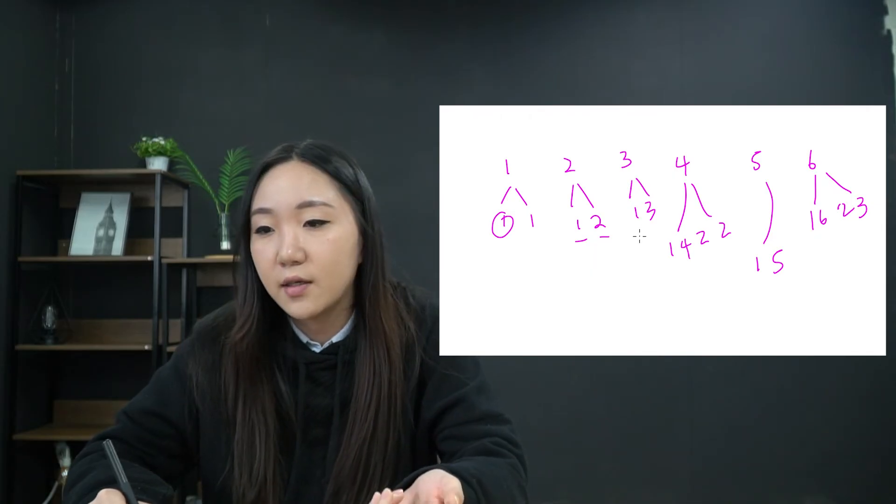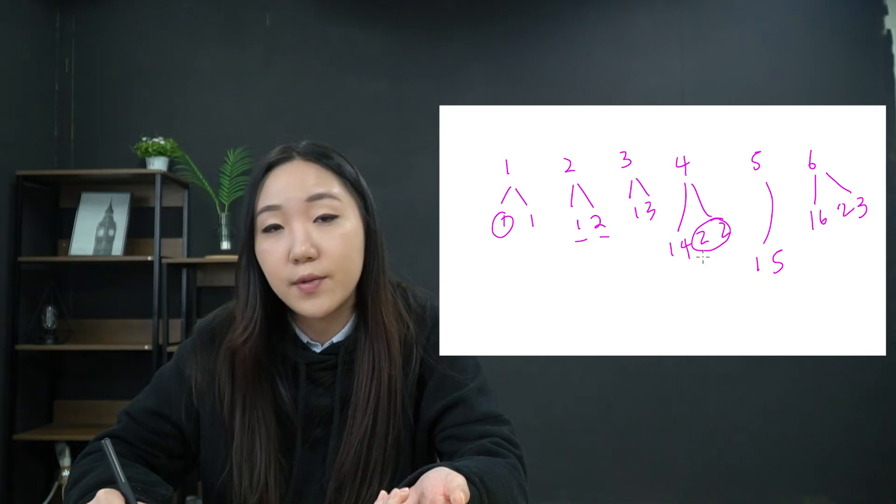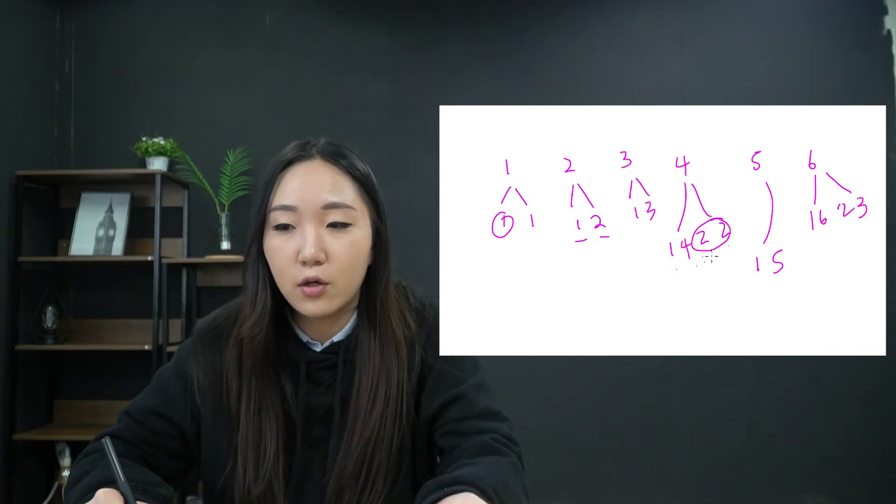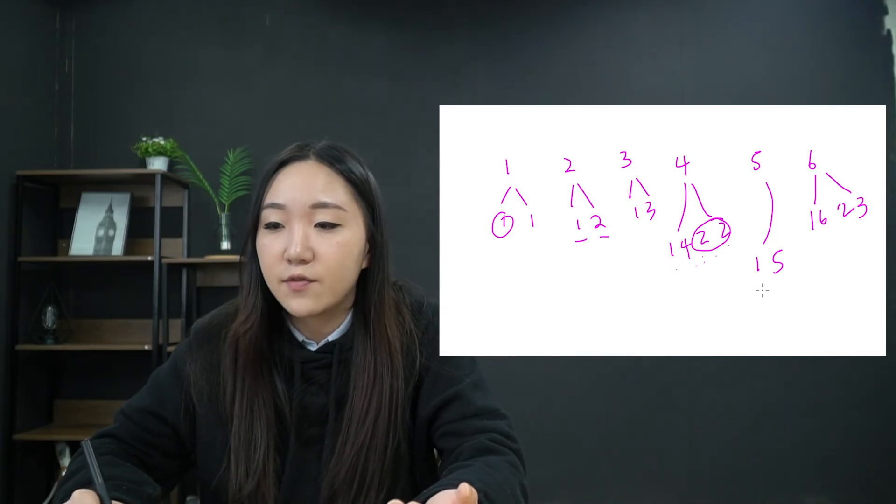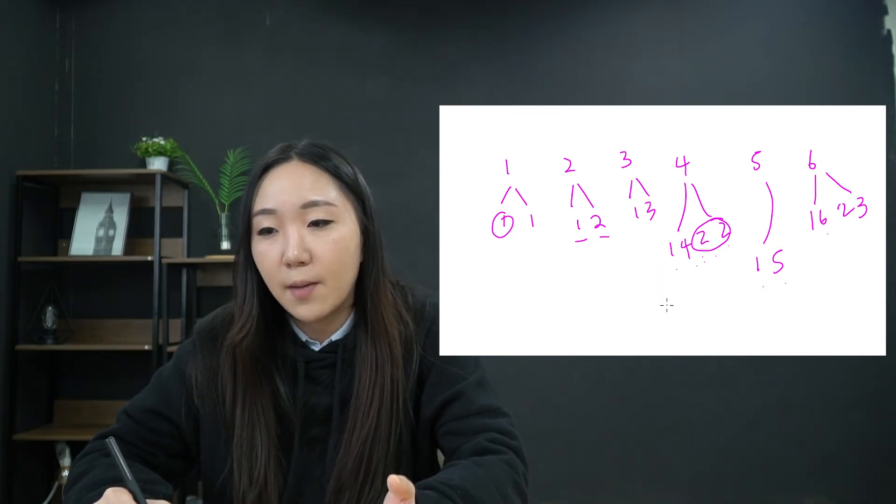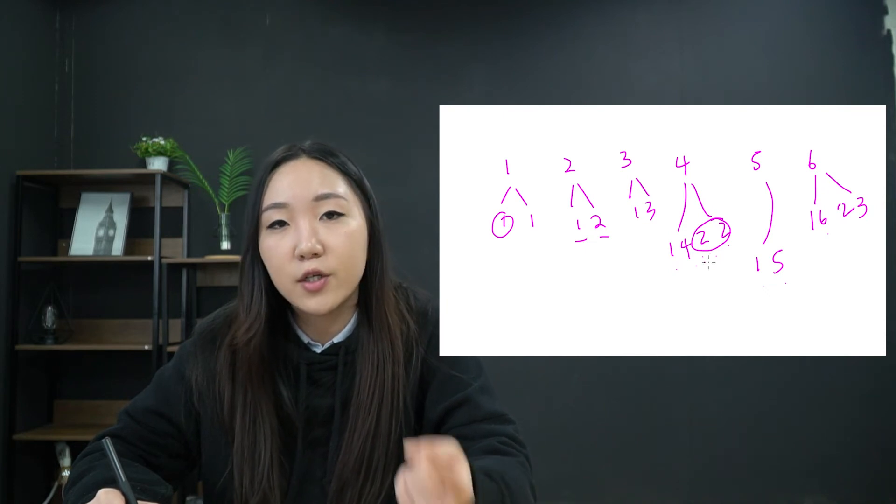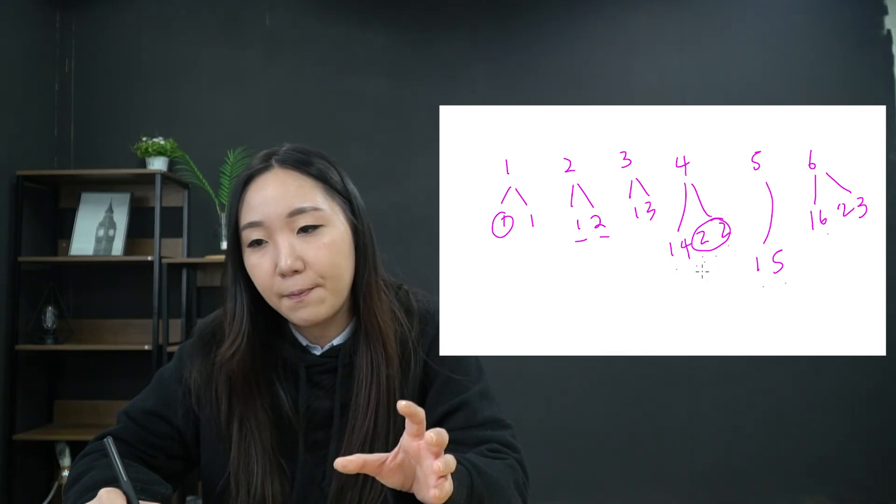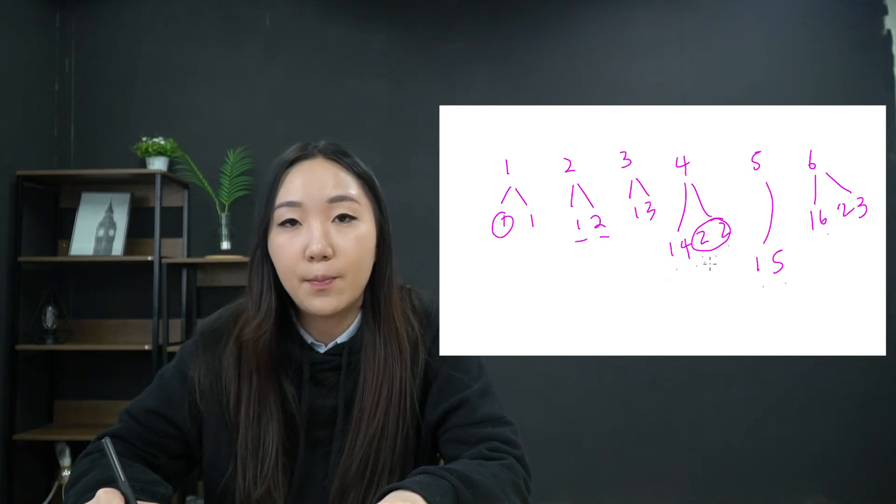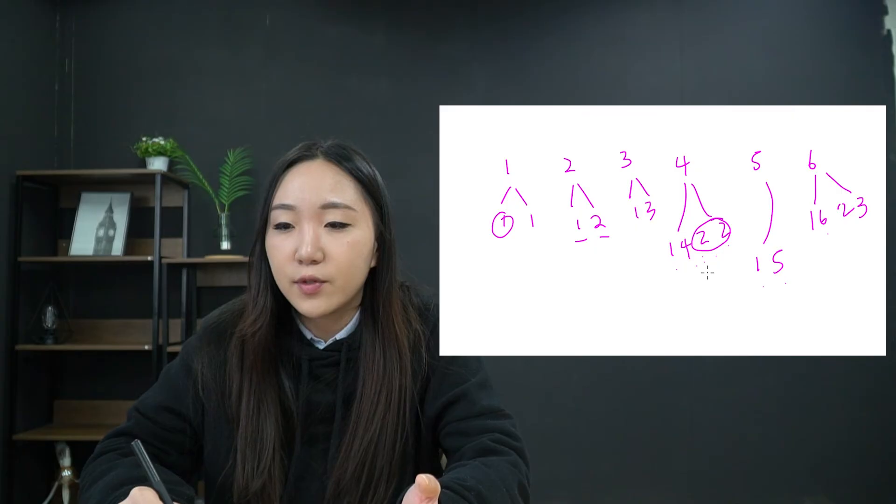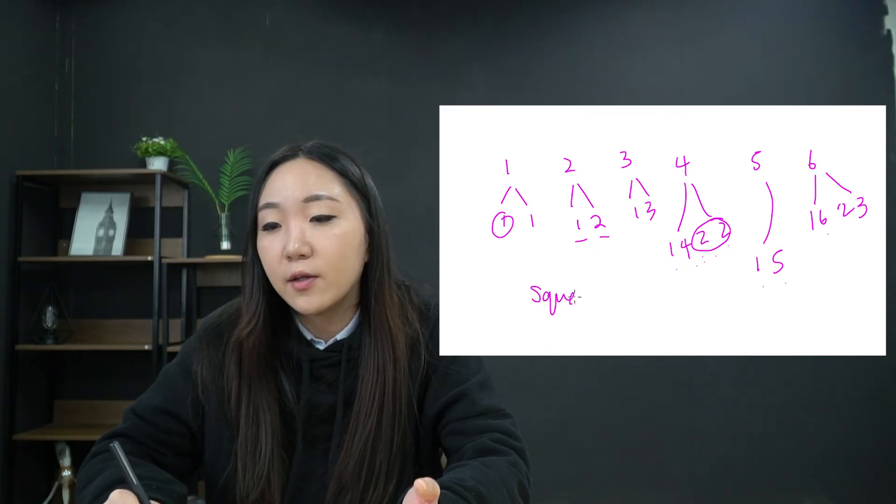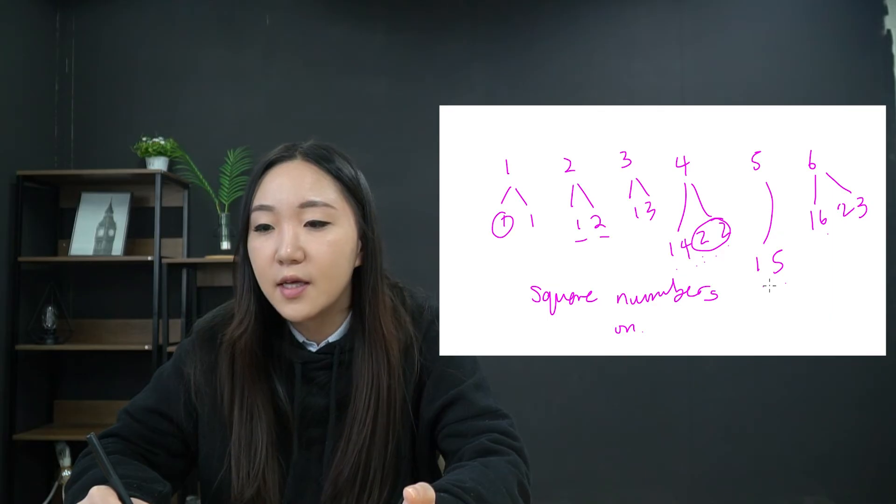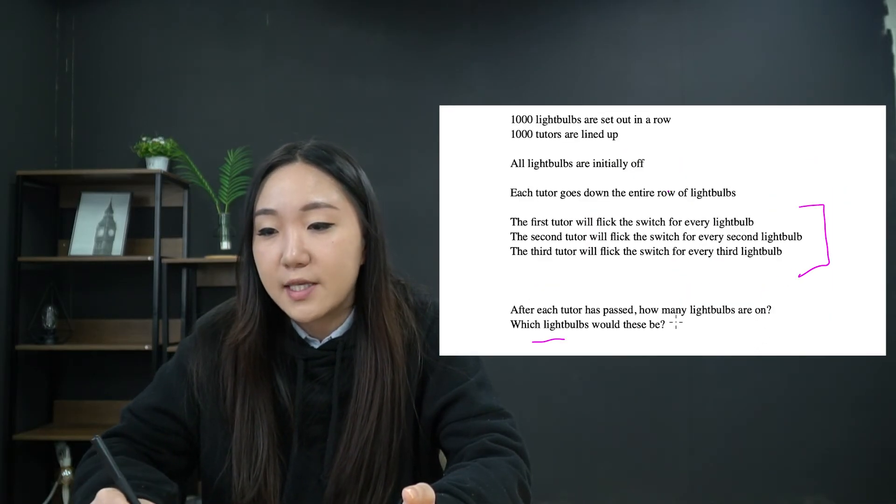So what you'll notice immediately is that for this one here, there's only one factor for one, because it times by itself. With two, we've got two numbers. So two tutors would pass, so it would be flicked on, and it'll be flicked off again. With three, it'll be flicked on and flicked off again. With four, again, we've got the case where two is multiplied by itself. So again, we've got a repeat. So the pattern you should be noticing is that for the numbers which have an odd number of factors, they will be flicked an odd number of times because of the tutors passing by. As a result, because it all starts as off, what we will see is that those will be the only lightbulbs that are on at the end. So the rule that you need to try and find is that all square numbers will be on.